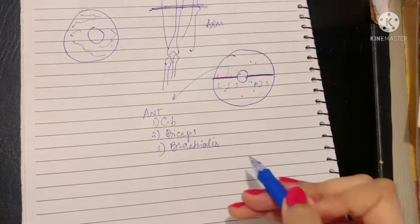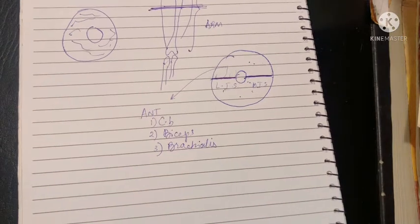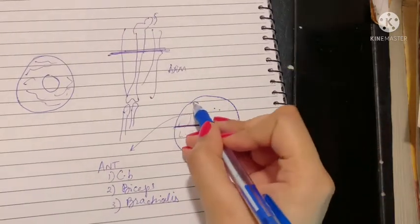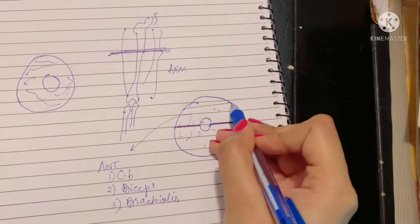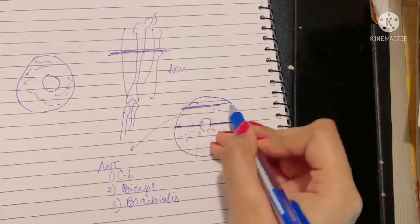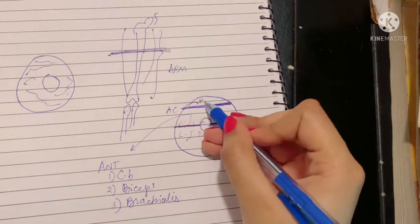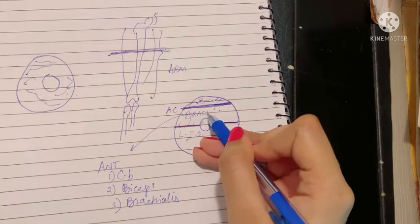Now these muscles have to be separated from each other, so there are more septums that are going to make this happen. The first is the transverse septum in the anterior compartment. The transverse septum divides the biceps from the brachialis.